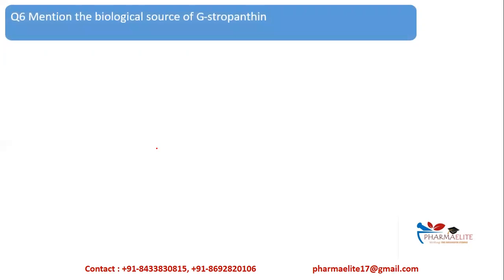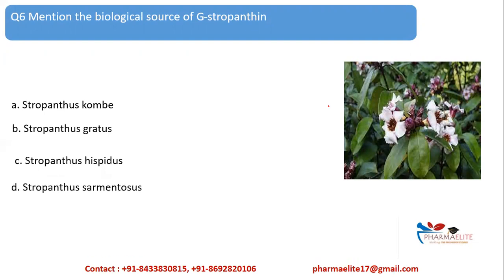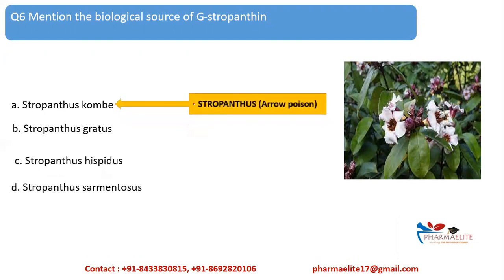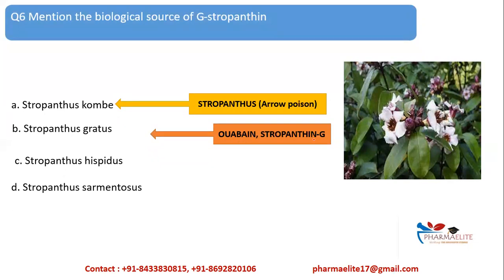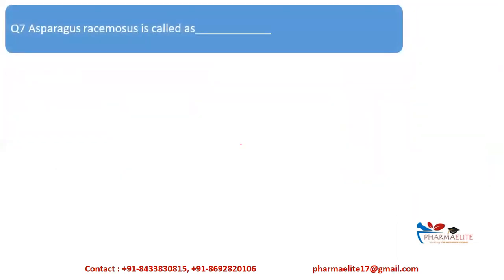Pharmacognosy questions on biological sources are mostly memory-based — there is no deep concept to explain. Next question: mention the biological source of G-strophanthin. The options are Strophanthus kombé, Strophanthus gratus, Strophanthus hispidus, and Strophanthus armeniacus. Strophanthus kombé is also known as arrow poison strophanthin. Strophanthus gratus is also called ouabain or strophanthin-G. The seeds of Strophanthus gratus are used to obtain G-strophanthin, so the correct answer is option B.